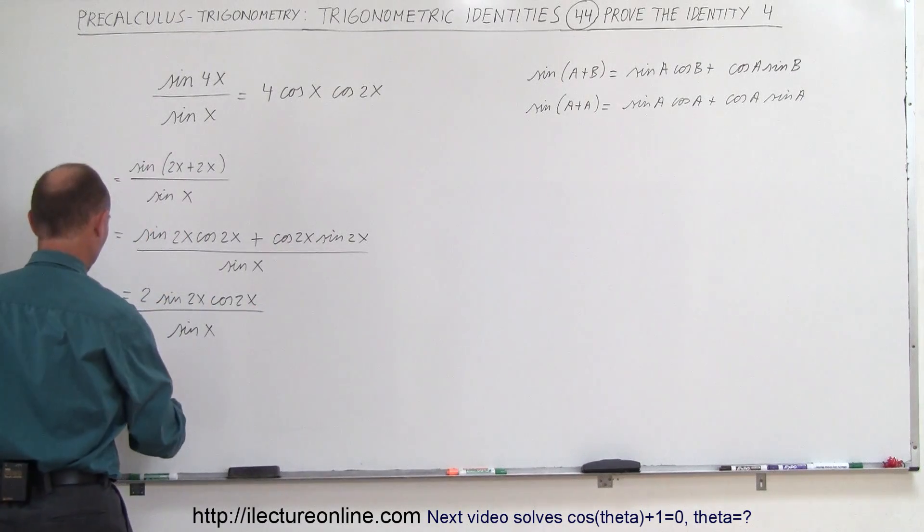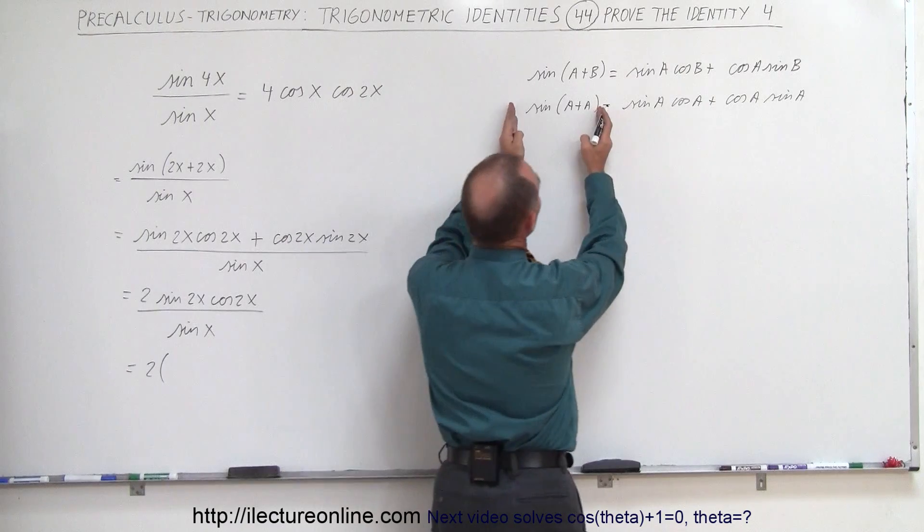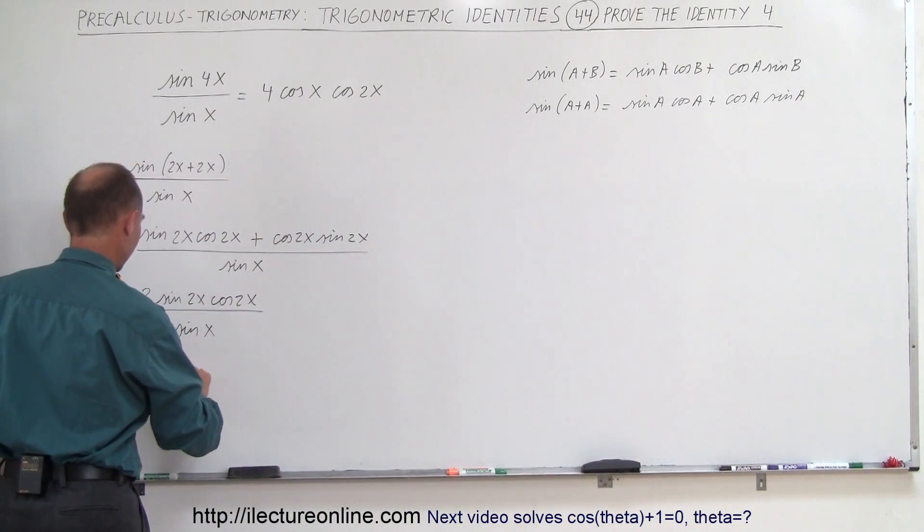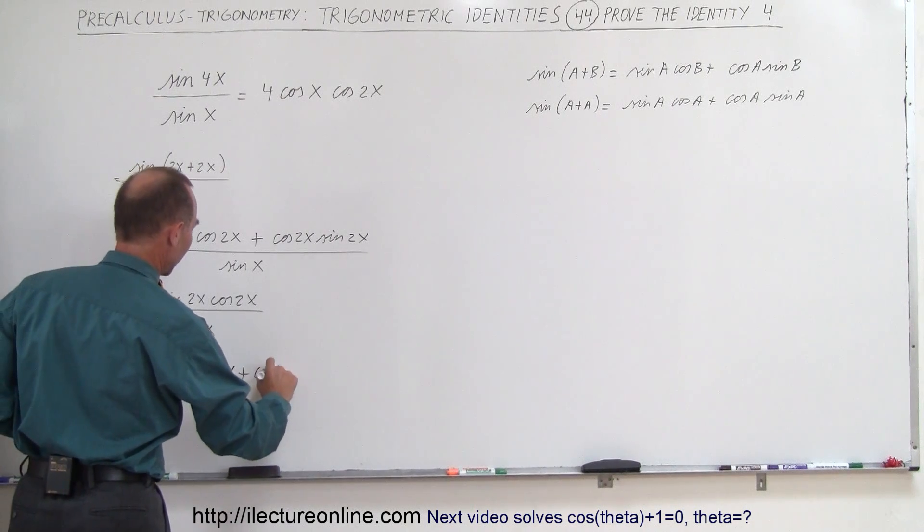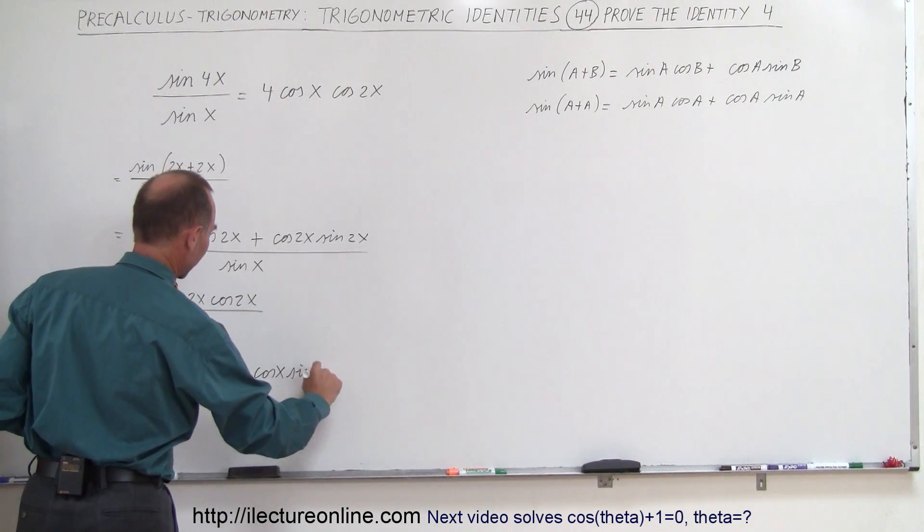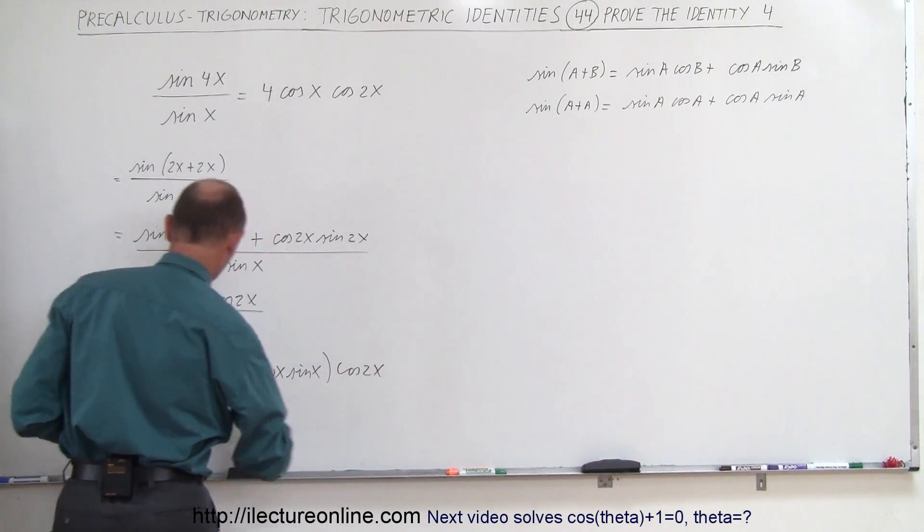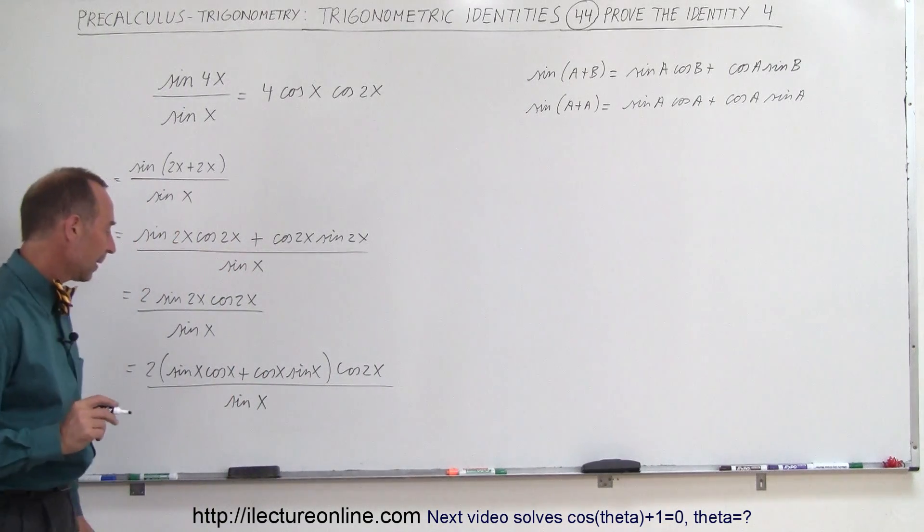So this can be written as two times, so the sine of 2x can be written like that, so it's going to be the sine of x times the cosine of x plus the cosine of x times the sine of x times the cosine of 2x all divided by the sine of x.